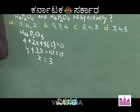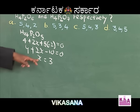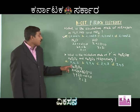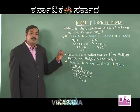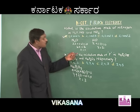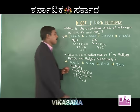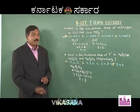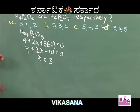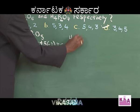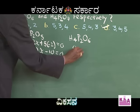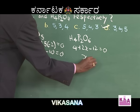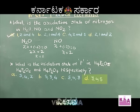Since the first answer is +3, option D has 3, 4, and 5, and no other option begins with 3. Therefore the most probable answer is option D. For H₄P₂O₆: 4 + 2x - 12 = 0, so x = +4. This matches option D. Hope you have understood this.